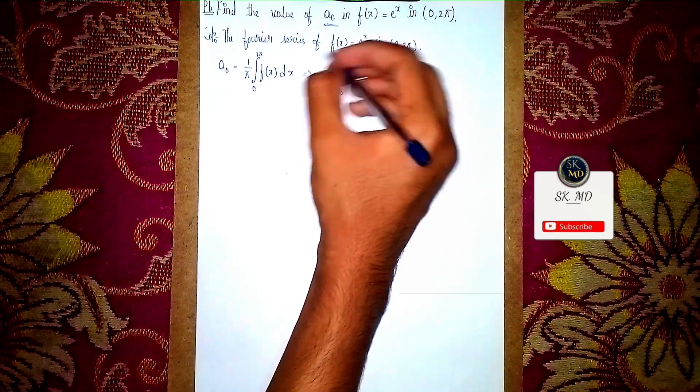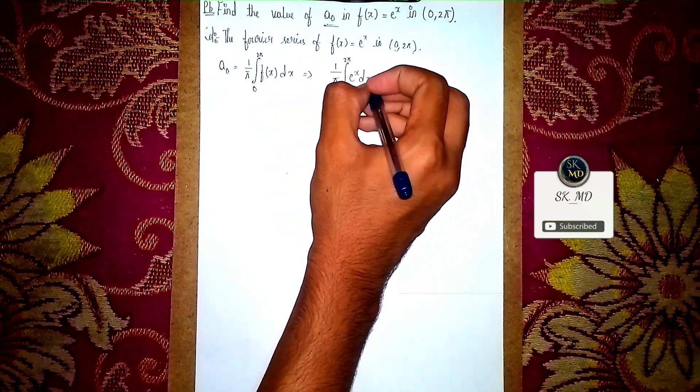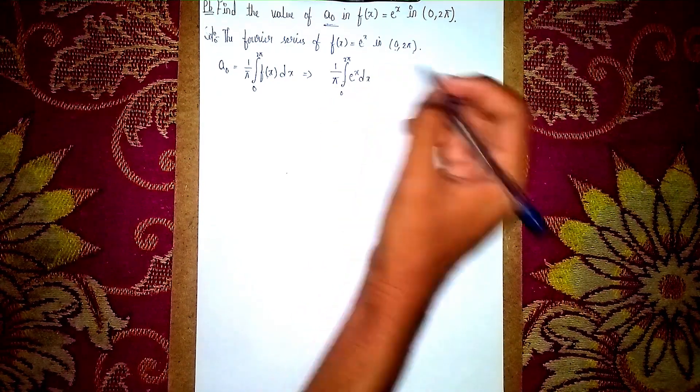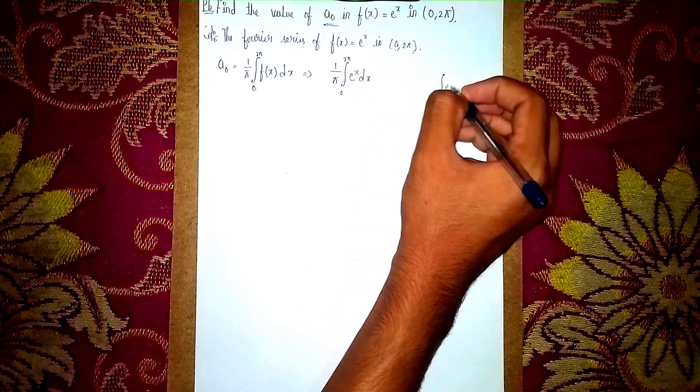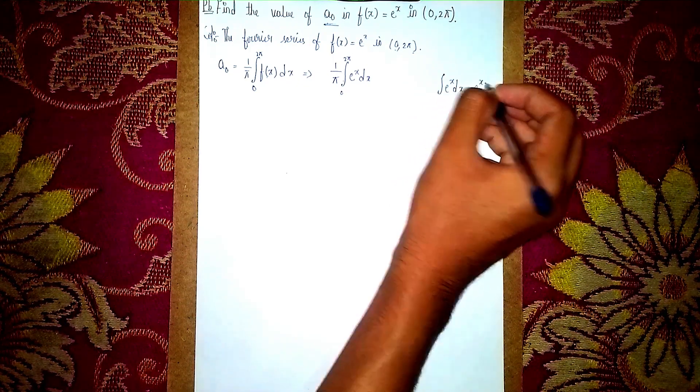f(x) = e^x, so (1/π)∫₀^(2π) e^x dx. Remember, ∫e^x dx = e^x; it remains the same, so you get e^x.